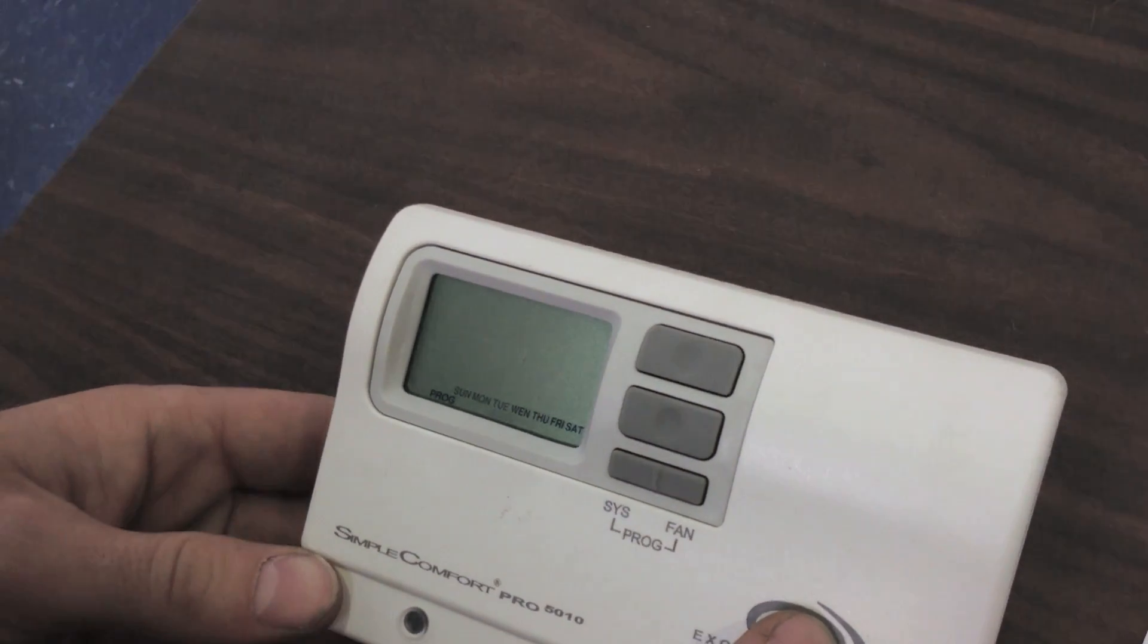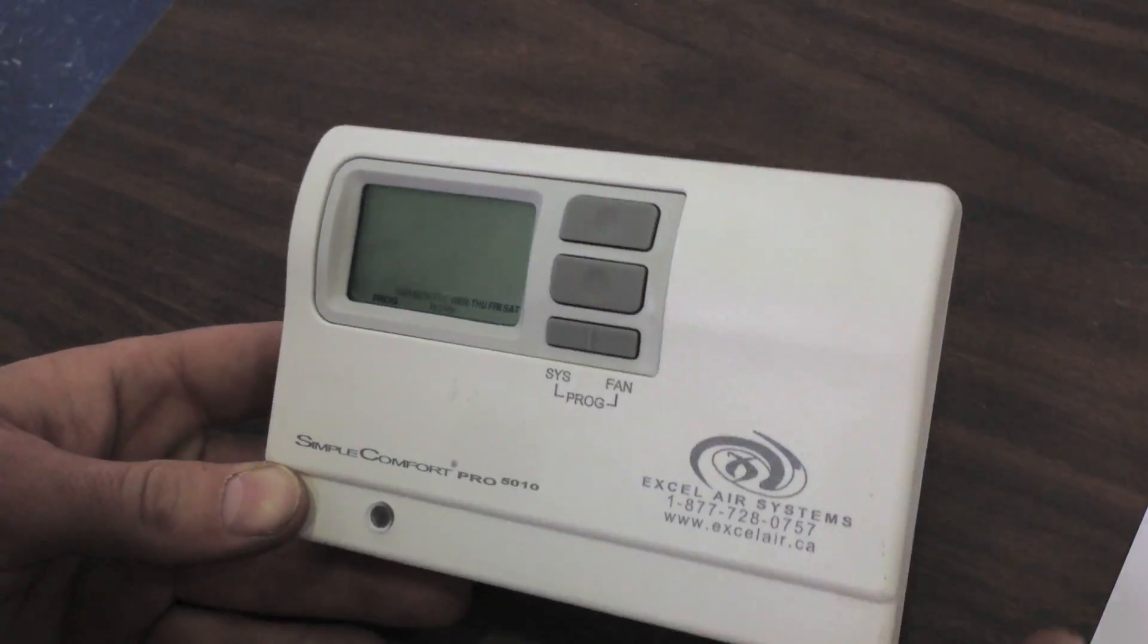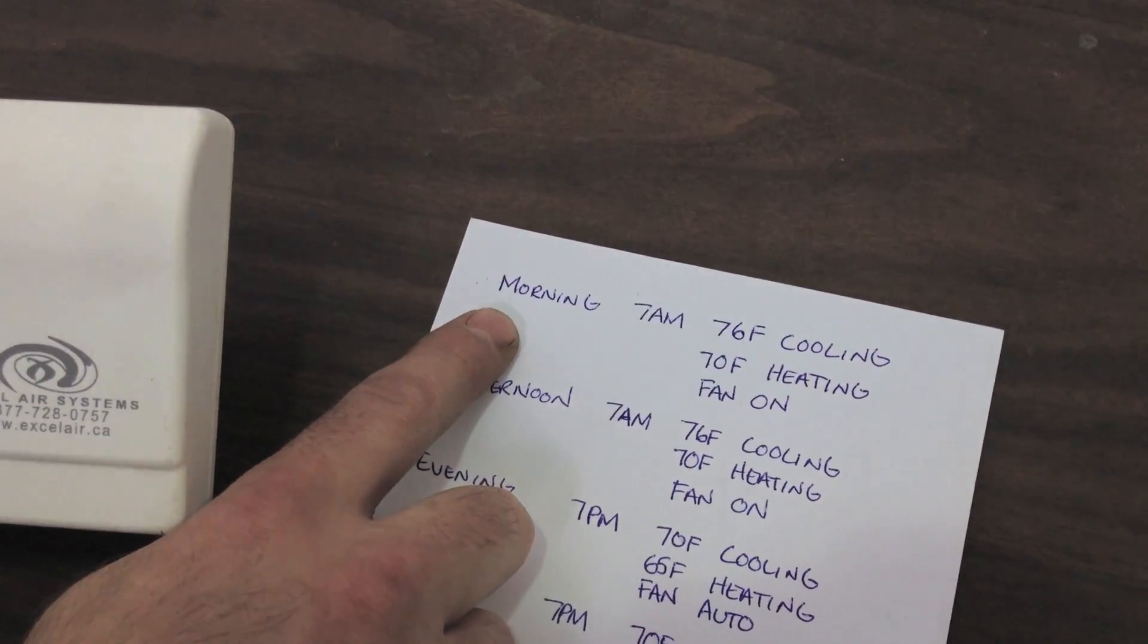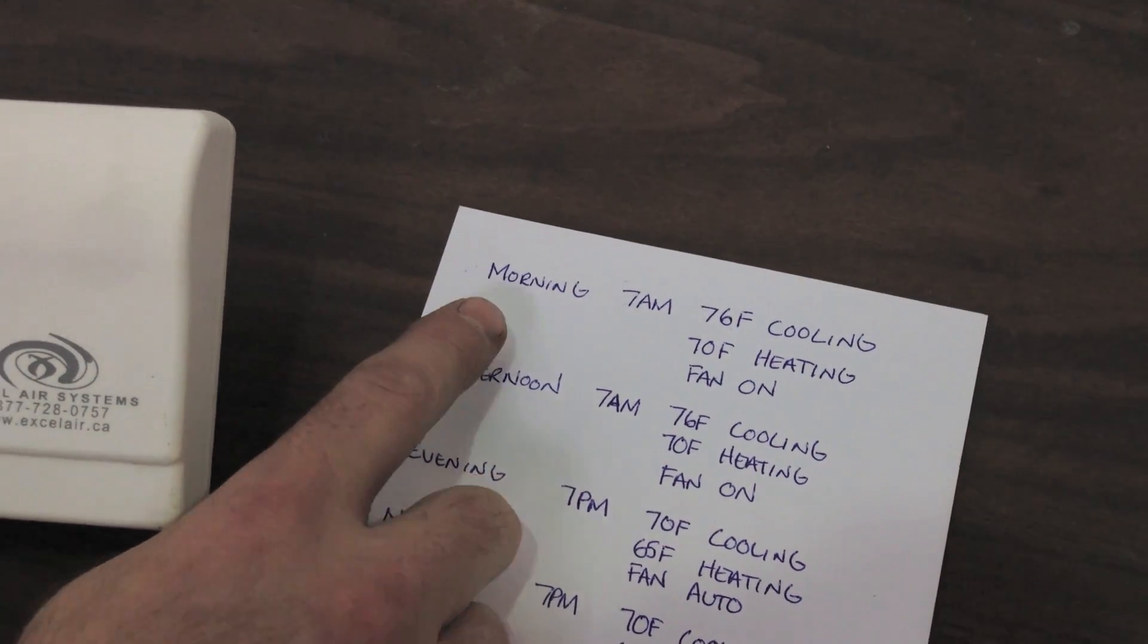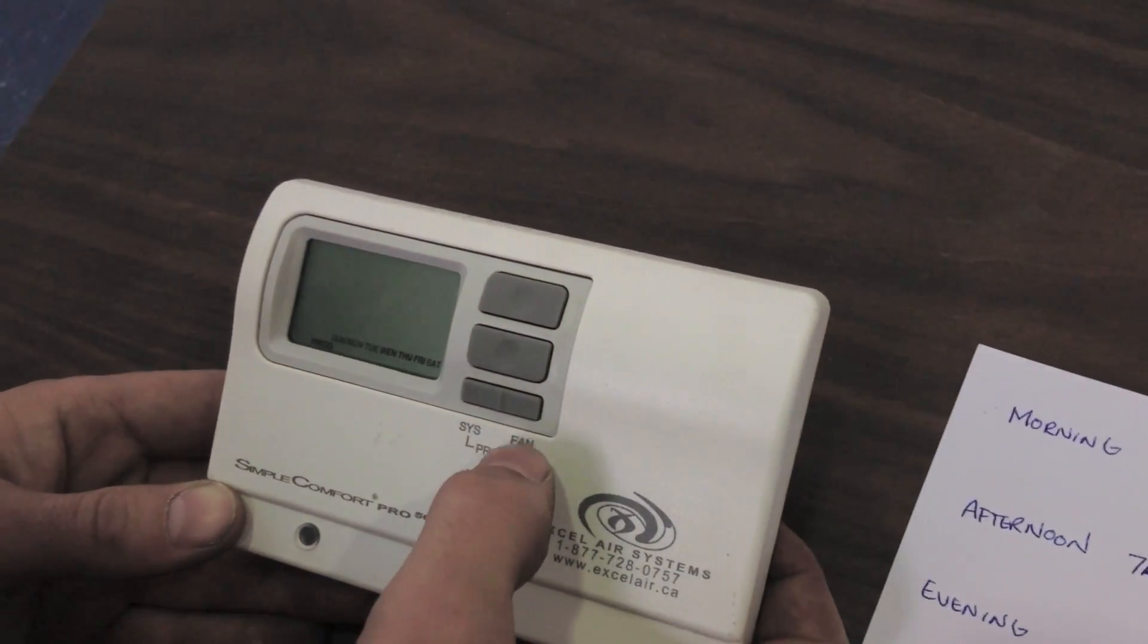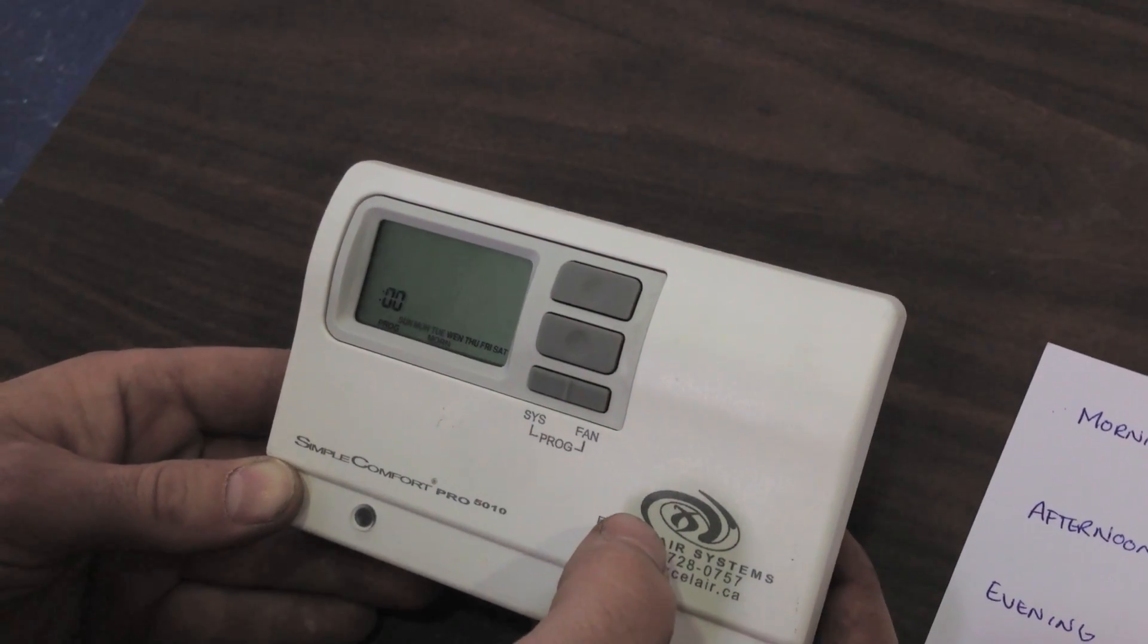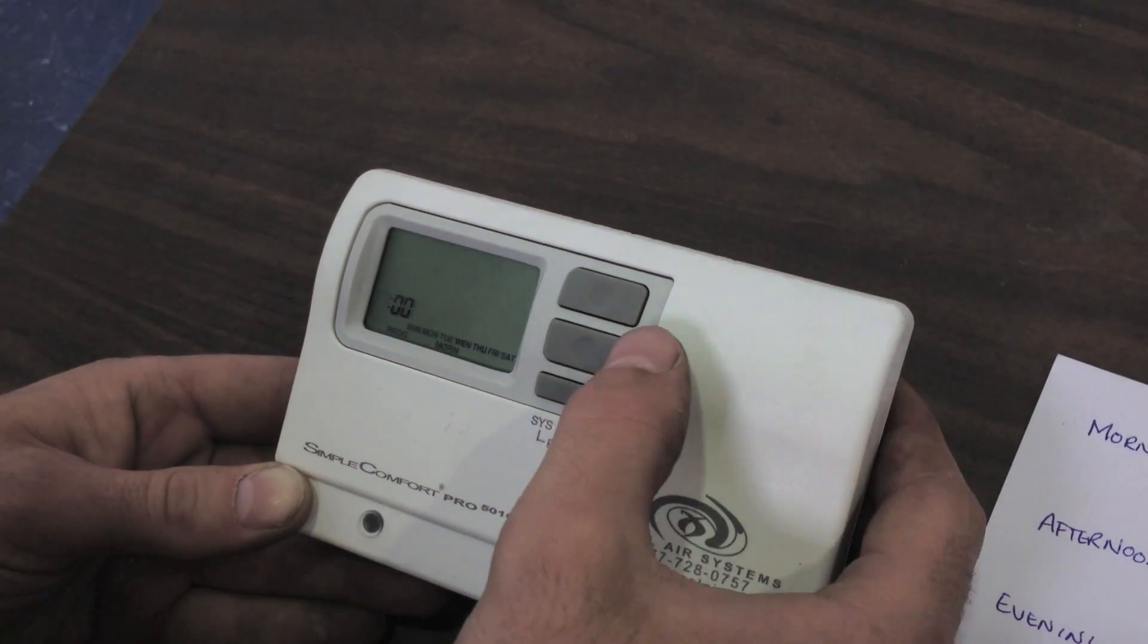And now our first schedule is appearing, morning. So we go over to our paper and we look at our morning schedule. So this is the one we want to start with. We're going to push our fan button. And the time is going to display. So we chose 7 a.m. for our morning schedule.